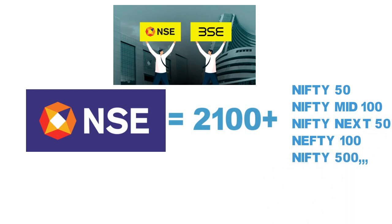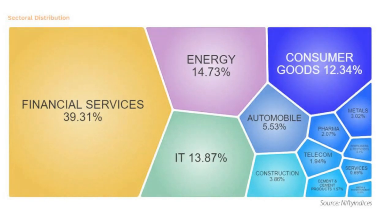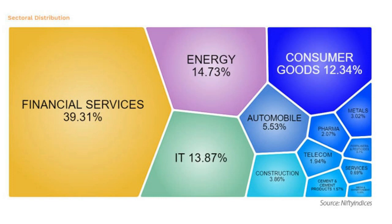We are going to select stocks sector-wise, not index-wise. We have many sectors like financial, auto, chemical, energy, FMCG, metal, pharma, and more. Percentage-wise: Financial Services is 39%, Information Technology 13%, Oil and Gas 12%, FMCG 12%, Auto 5%. From these, I will select the Banking and Auto sectors.